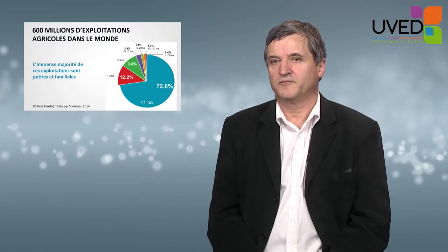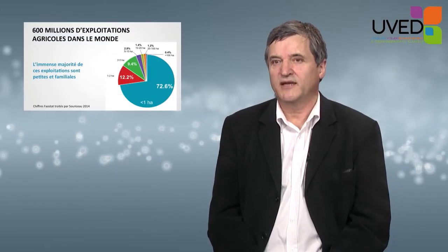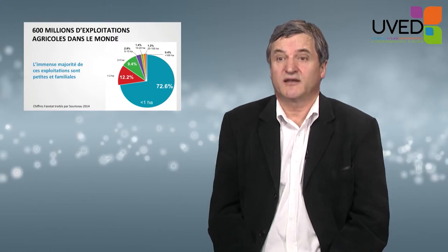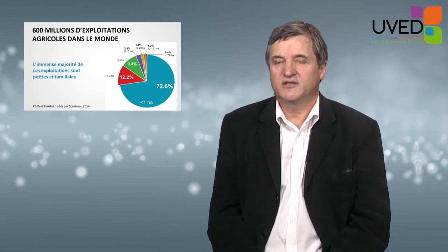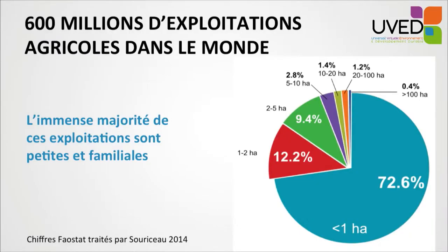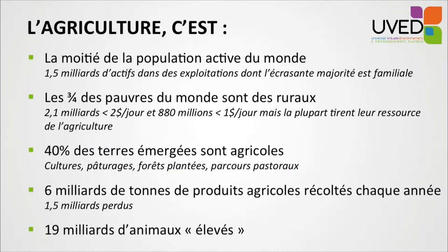1.5 billion people work in the field of agriculture with 600 million farms across the world. A large majority of these farms are family farms — very small, sometimes local, passed from father to son, remaining within the family and based on family manpower. This represents the vast majority of agricultural structures across the world, with 1.5 billion people working in agriculture representing half of the active population worldwide.